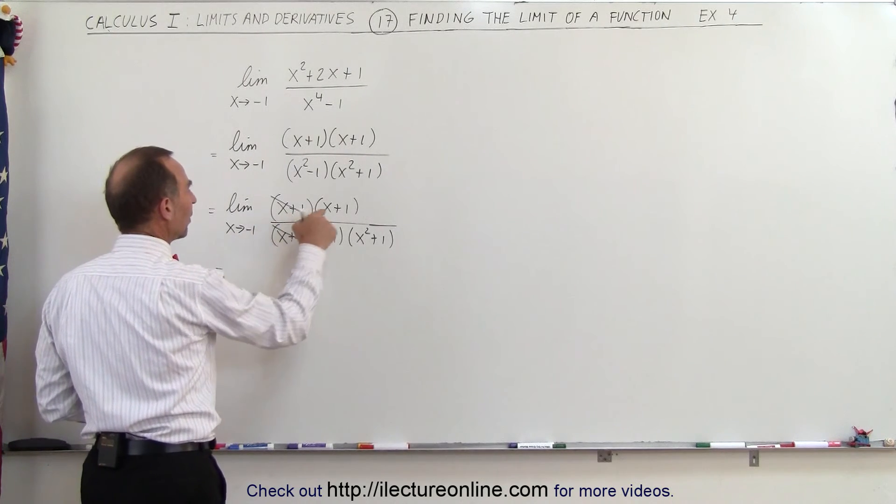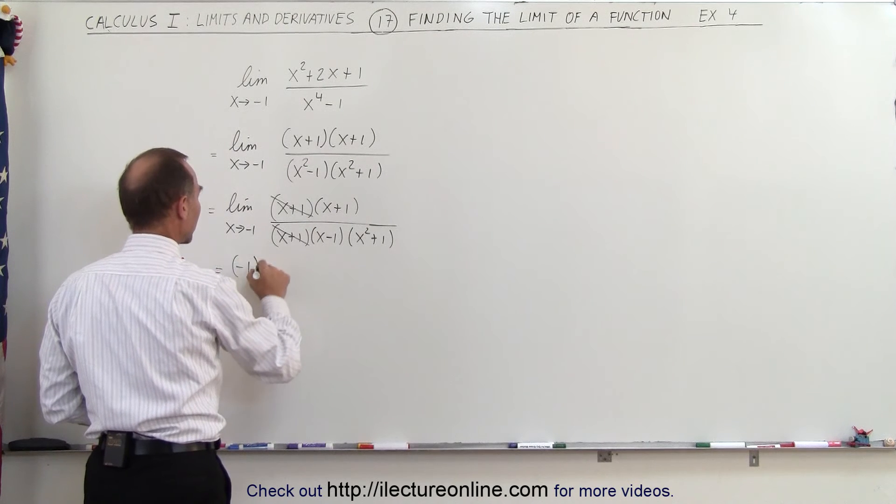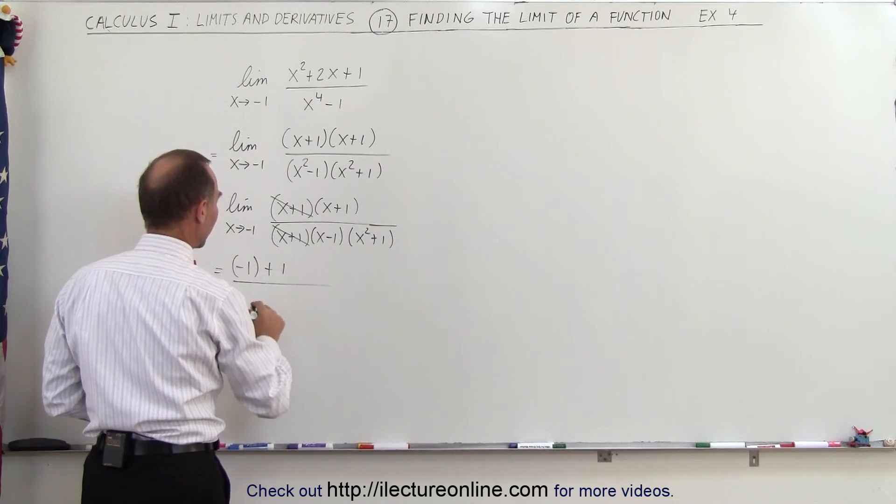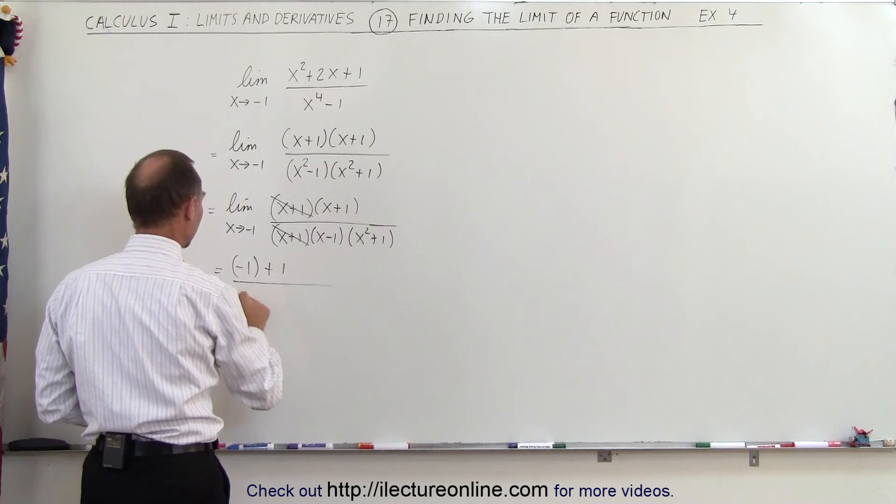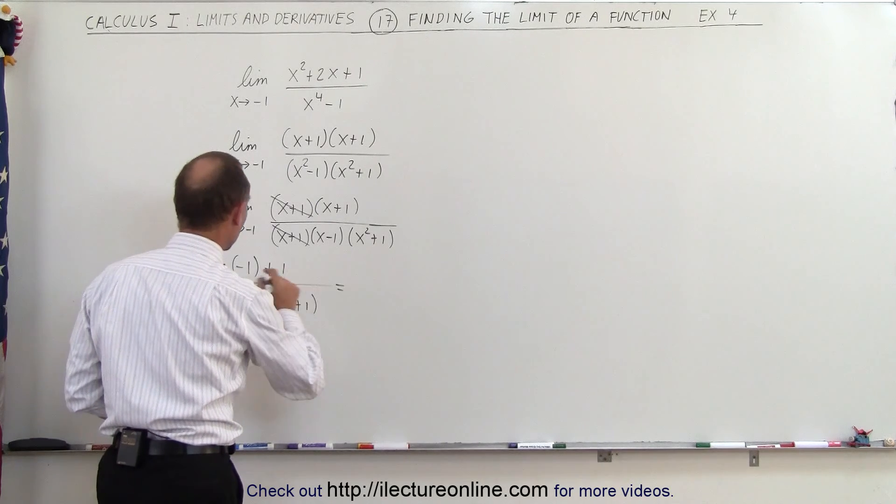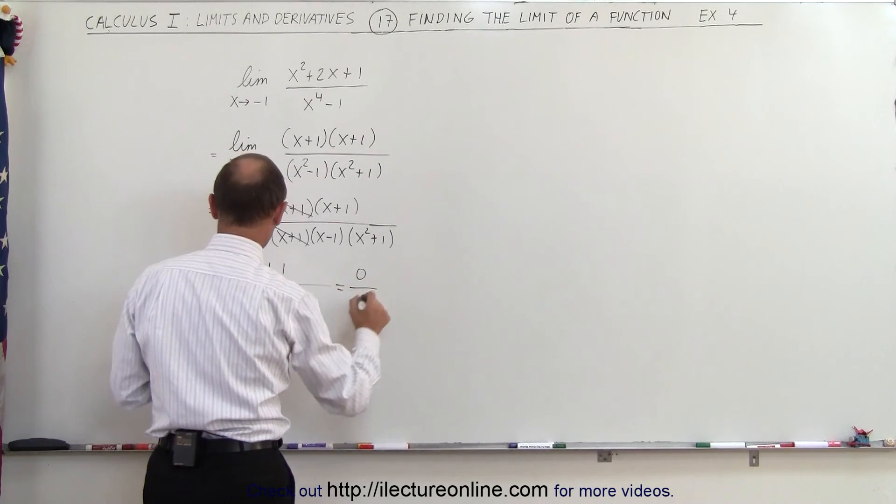So this is equal to, plug in negative 1 here, we get negative 1 plus 1 in the numerator, divided by, so that would be negative 1 minus 1 multiplied times 1 plus 1. So this would be 0 divided by,